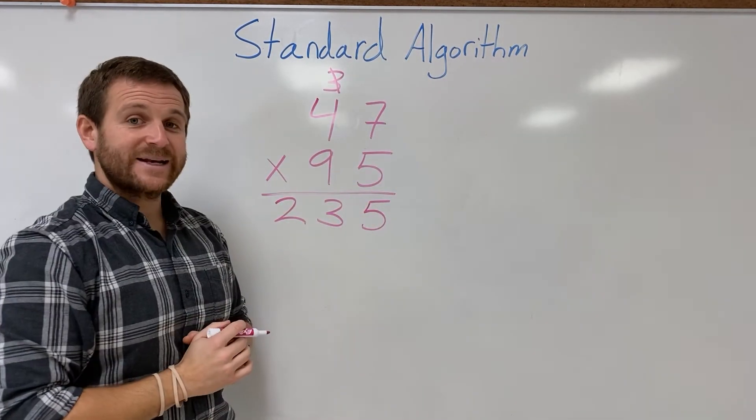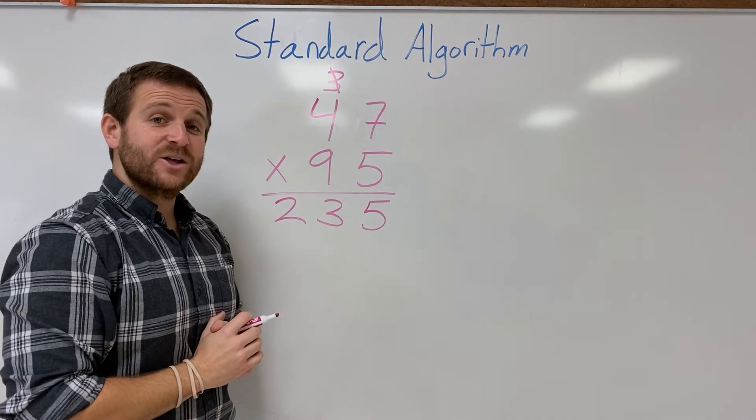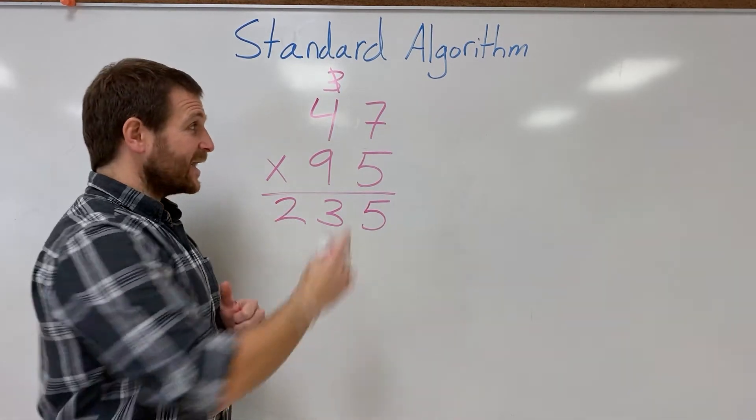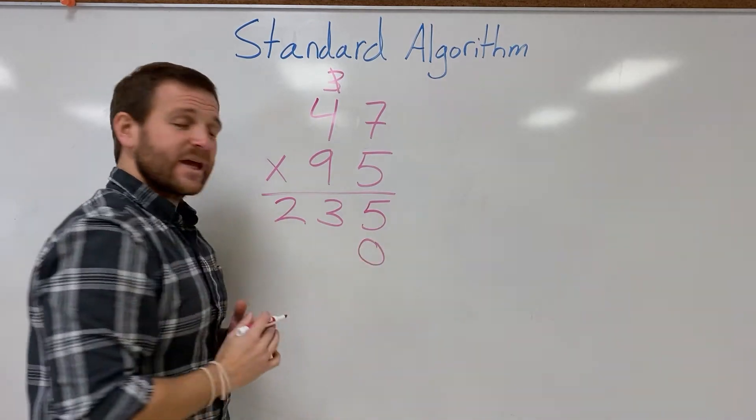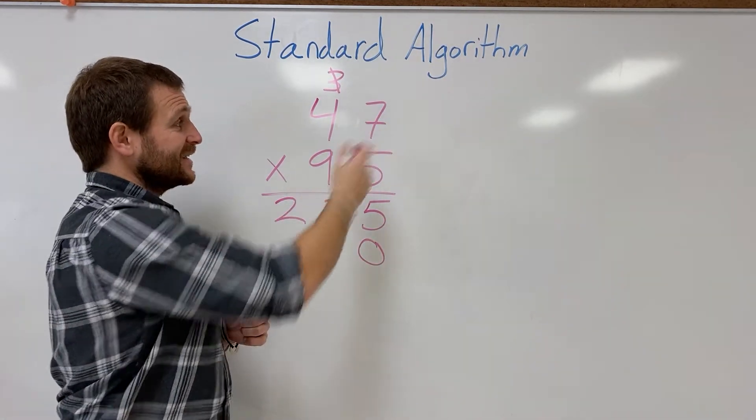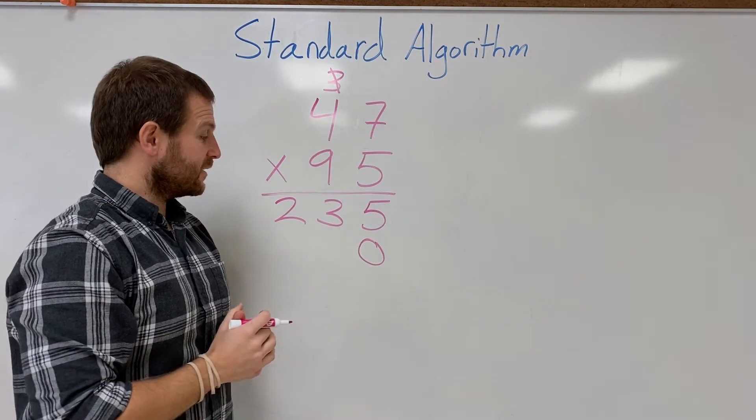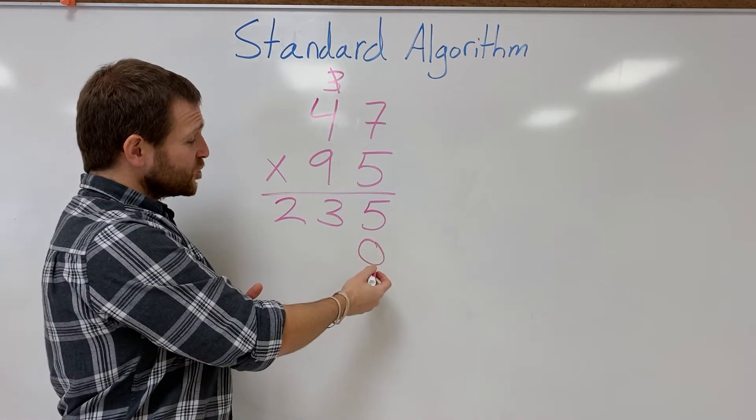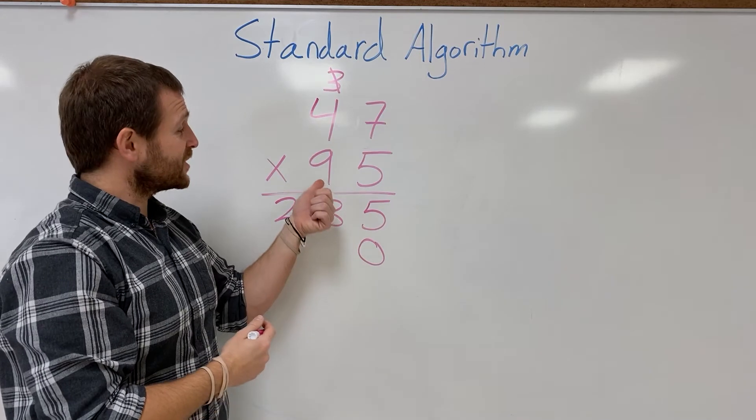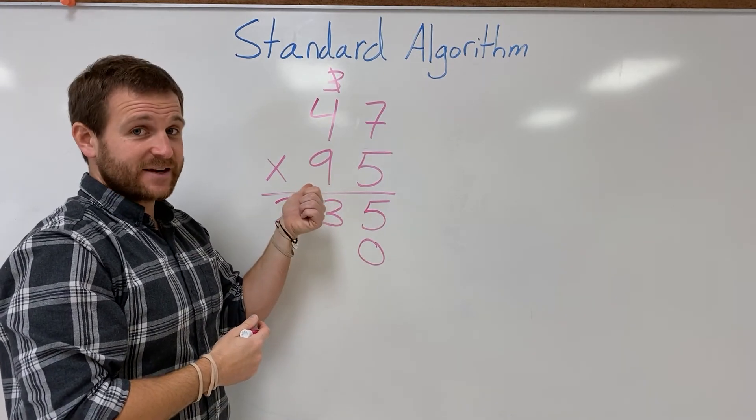So now I move on to my 90. Knowing that the value of this is a 90, I know anything I multiply is gonna get me a 0 in my ones place. 90 times 7 is going to get me a number higher than 10, so I place the 1 there and that allows me to look at this as a 9 instead of a 90.